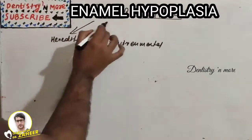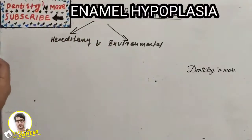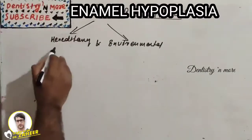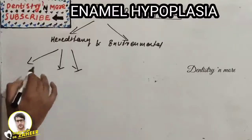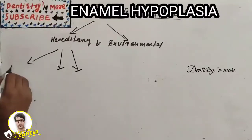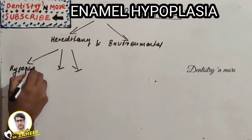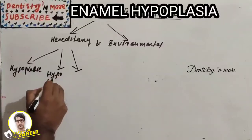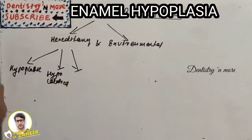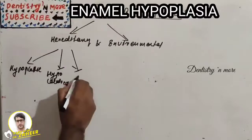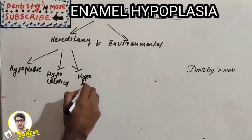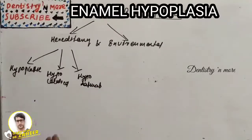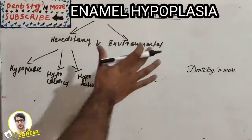There are two types: hereditary type and environmental type. The hereditary type is an ectodermal disturbance which occurs during embryonic development, and it has three subtypes: hypoplastic, which is defective formation of the organic matrix; hypocalcified, which is defective mineralization of the matrix; and hypomaturative, where there is defective maturation of the matrix.